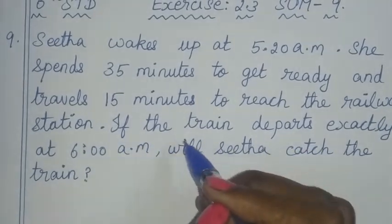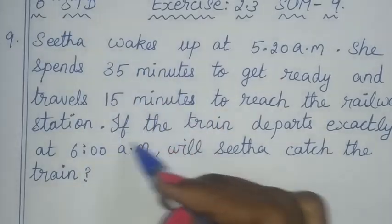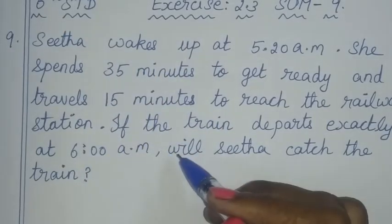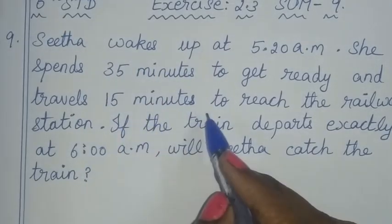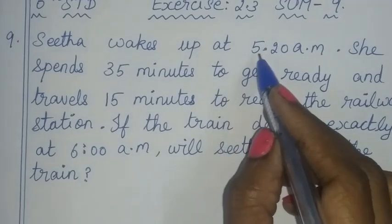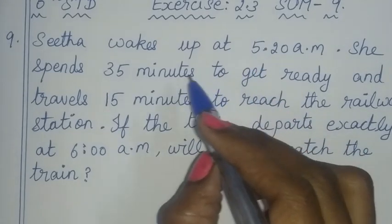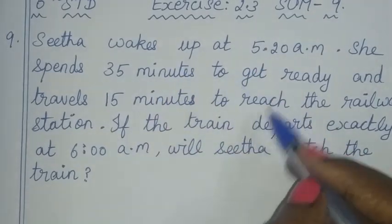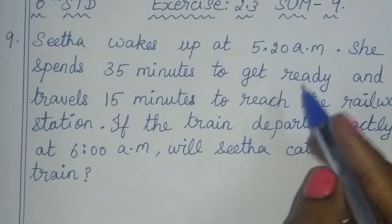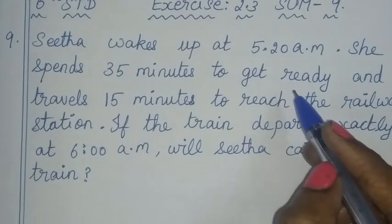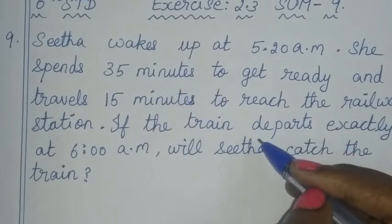You have to travel 35 minutes and 15 minutes. So when we add the starting time and the duration time, we will get the finishing time. If we add the finishing time, we can find the finishing time.